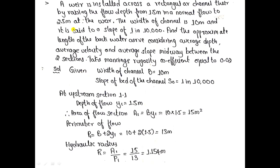Problem 5: A weir is installed across a rectangle channel, raising the flow depth from 1.5 m (normal flow) to 2.5 m at the weir. The channel width is 10 m, laid to a slope of 1 in 10,000. Find the approximate length of the backwater curve considering average depth, average velocity, and average slope midway between the two sections. Manning's n = 0.02.